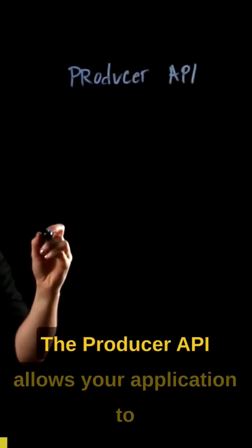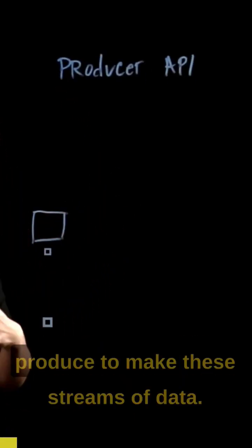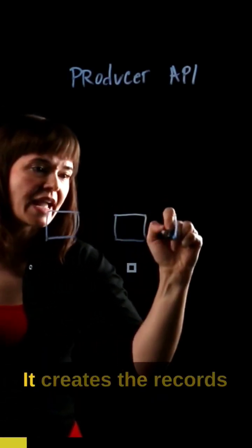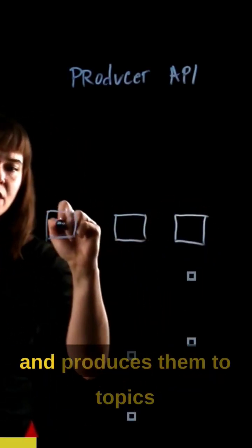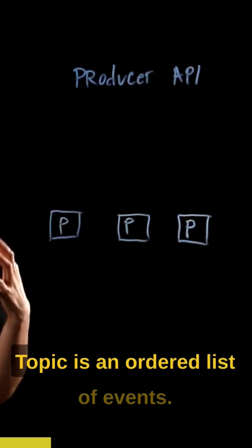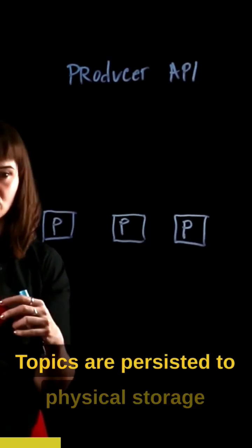The first one is the producer API. The producer API allows your application to produce streams of data. It creates the records and produces them to topics. A topic is an ordered list of events. Topics are persisted to physical storage.